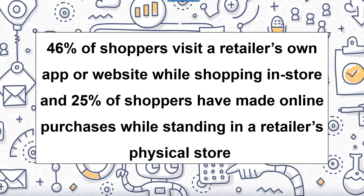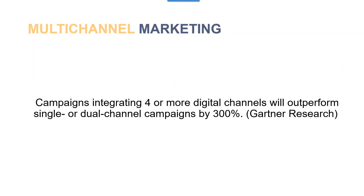46% of shoppers visit a retailer's own app or website while shopping in their store, and 25% of shoppers have made online purchases while standing in a retailer's physical store. That puts it into perspective — you need to be present on all those different channels online in order to get people onto your website. And a statistic from Gartner Research: campaigns integrating four or more digital channels will outperform single or dual channel campaigns by 300%. It's not even good enough to be on two or three channels — you've got four or more, covering your website, all your marketing channels, your social channels, everything.